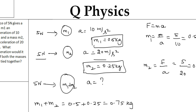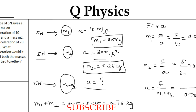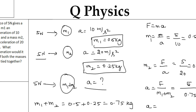Now, to find the final acceleration: acceleration = force divided by total mass = 5 newtons divided by (m1 + m2) = 5 divided by 0.75. Simplifying this gives an acceleration of approximately 6.67 meters per second squared.